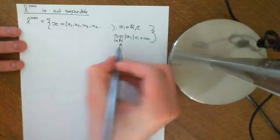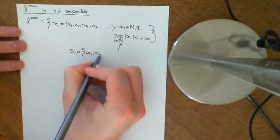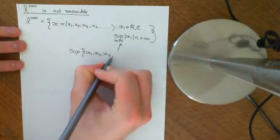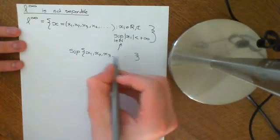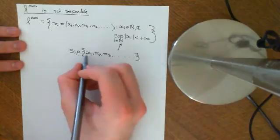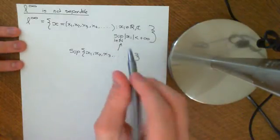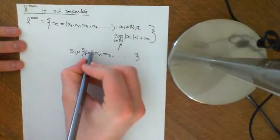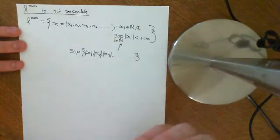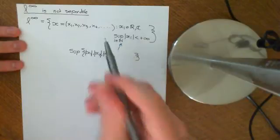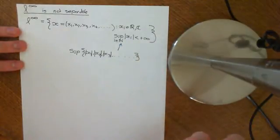What this means is the supremum of the set {|x1|, |x2|, |x3|, ...} for all natural numbers — you put all the terms of the sequence into a set and take the supremum, which is the least upper bound, and that needs to be some finite value. We need the modulus of these terms: for real numbers that means absolute value, making negative numbers positive; for complex numbers it means the complex modulus, which is in some sense the length of a complex number.